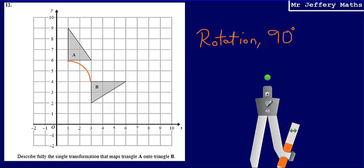And so what I can now say is that my final answer is going to be that it is a rotation 90 degrees and it is going to be centre. So the centre of rotation is going to be where I just placed my compass, the coordinate 1, 4. So final answer, rotation 90 degrees, centre 1, 4.